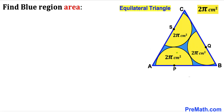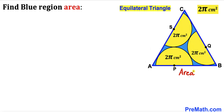Welcome to Pre-Math. In this video we have three identical yellow semicircles fully inscribed in an equilateral triangle ABC, such that the area of each yellow semicircle is 2π cm². P, Q, and S are the centers of these semicircles, and furthermore these yellow semicircles are tangent to each other. Our task is to calculate the area of the blue shaded region inside triangle ABC.